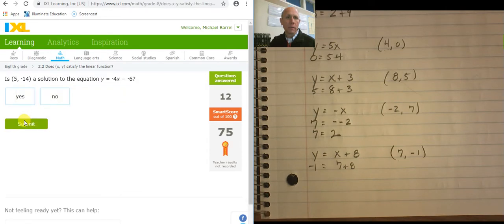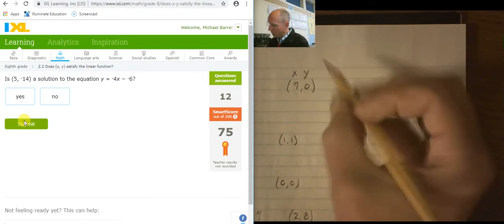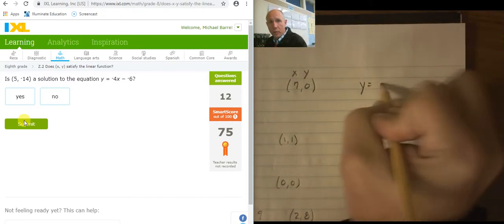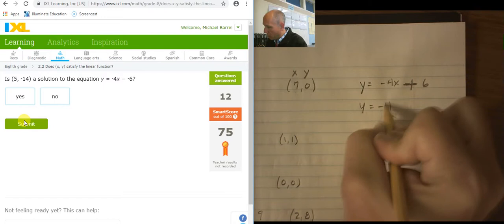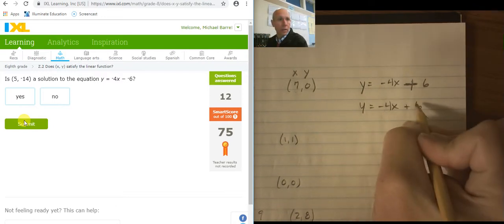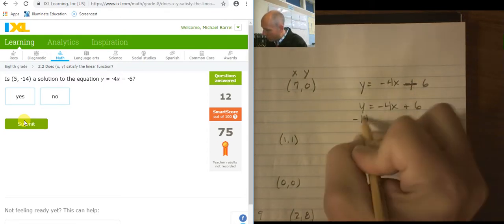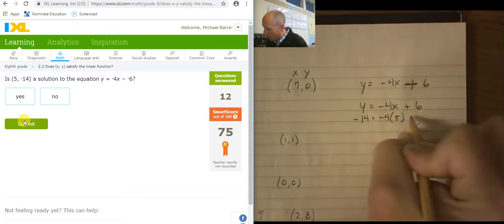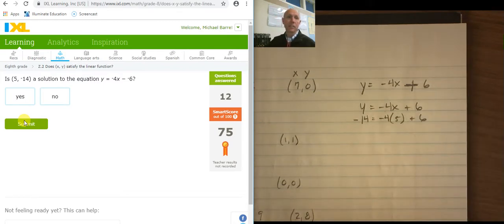Plugging in a 5. That gives me negative... Ah, this is an interesting one. Let's take a look at this. Y equals negative 4x minus negative 6. Minus negative 6. See those two? They become a positive. So, y equals negative 4x plus 6. x is 5. And y is negative 14. So, negative 14 equals negative 4 times 5 plus 6. Negative 20 plus 6 is negative 14. So, this is actually a yes.